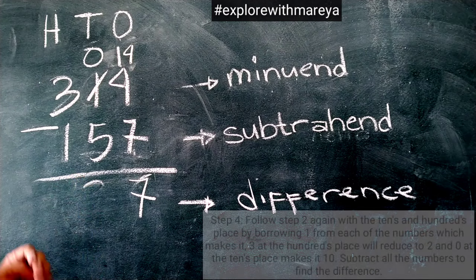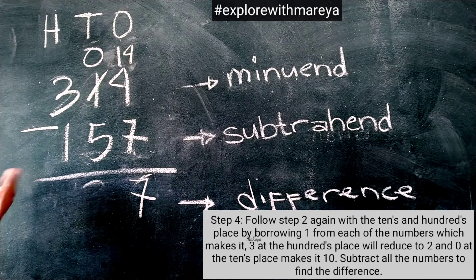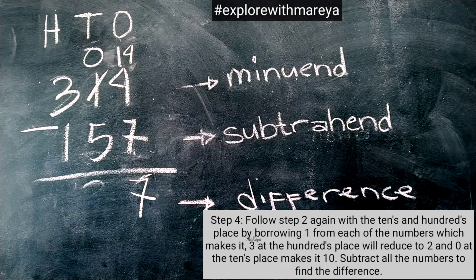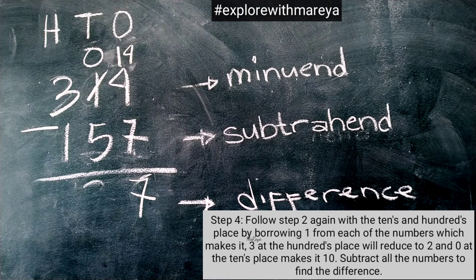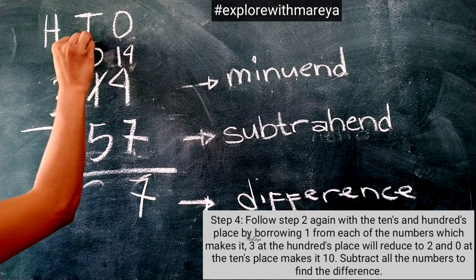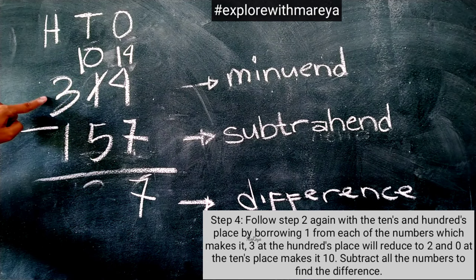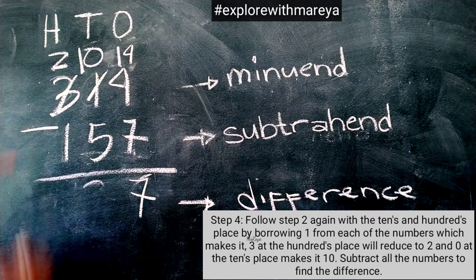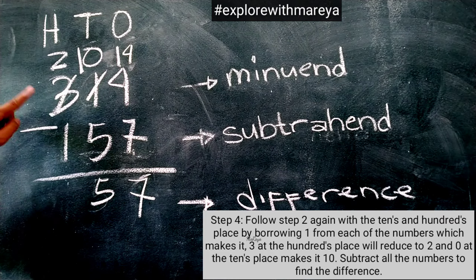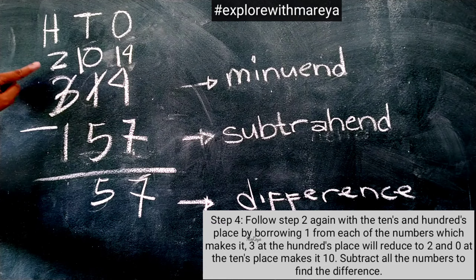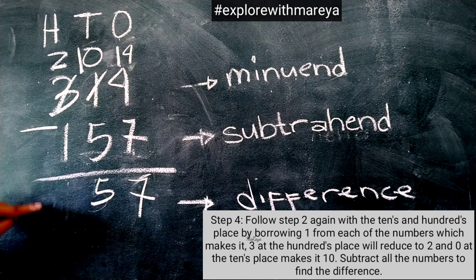Step 4: Follow step 2 again with the 10's and 100's place, borrowing 1 from each of the numbers. At the 100's place, it reduces to 2, and 0 at the 10's place makes it 10. So 10 minus 5 equals 5, and this 3 becomes 2 already, so 2 minus 1 equals 1.